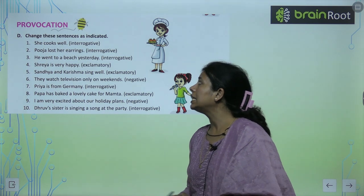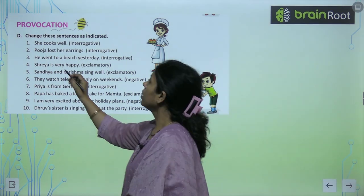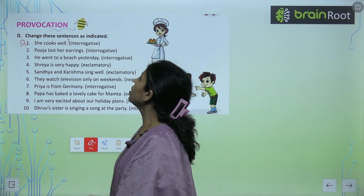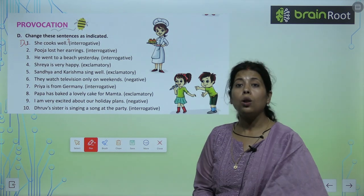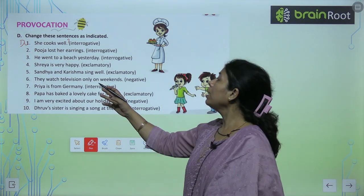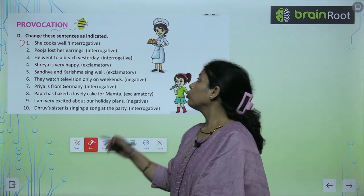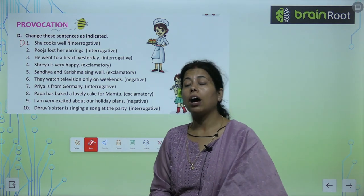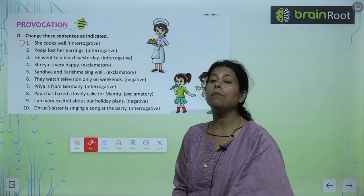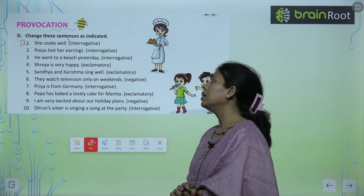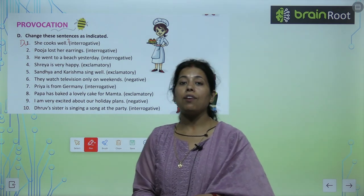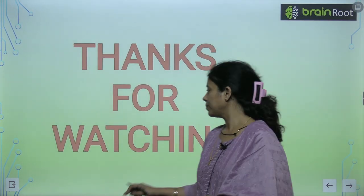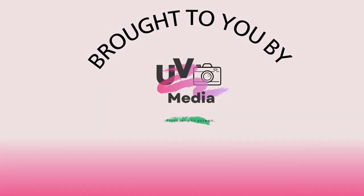Change your sentences as indicated: 'She cooks well' — interrogative → 'Does she cook well?' 'Pooja lost her earrings' — क्या उसने अपने earrings खो दिए? 'He went to a beach yesterday' — interrogative form में convert करके question mark लगाएं। 'Shriya is very happy' — exclamatory: 'Wow, Shriya is very happy!' 'Sandhya and Karishma sing well' — exclamatory: 'Wow, Sandhya and Karishma sing well!' Like this, you have to change these sentences. Thanks for watching!